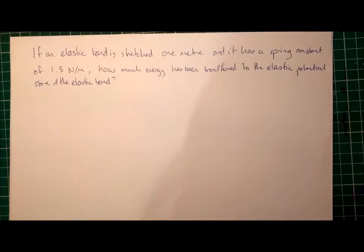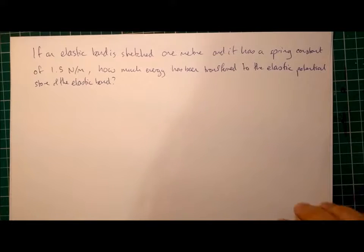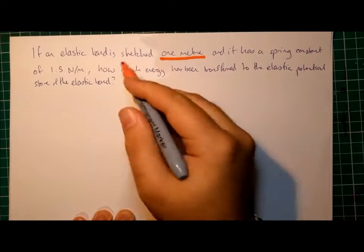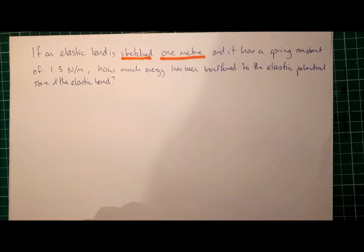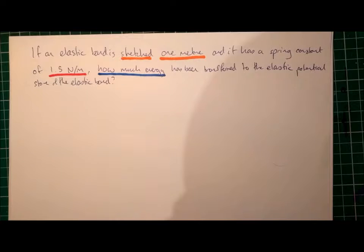So, if we look at an example question, let's read it through. If an elastic band is stretched one metre, and it has a spring constant of 1.5 Newtons per metre, how much energy has been transferred to the Elastic Potential Store of the elastic band? Well, first things first, let's have a look through for the numbers in the question. We've got one metre, which must be our extension, because it's been stretched one metre. And it has a spring constant of 1.5 Newtons per metre. Now what it's asking us for is how much energy has been transferred to the Elastic Potential store.